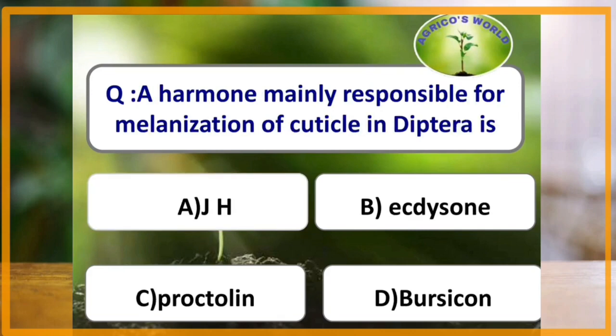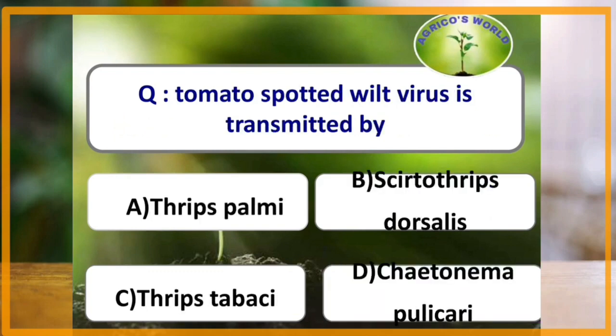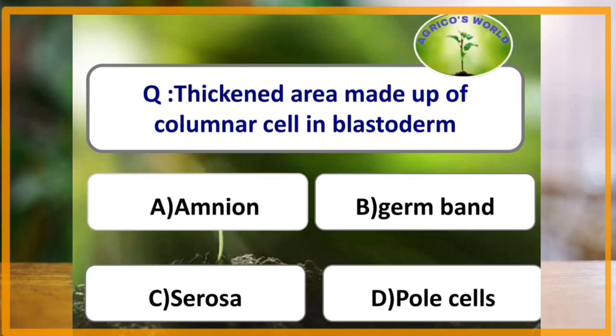Important and strongly stimulating phagostimulant for locusts is glucose. The hormone mainly responsible for melanization of cuticle in Diptera is bursicon. Tomato spotted wilt virus is transmitted by Thrips tabaci.